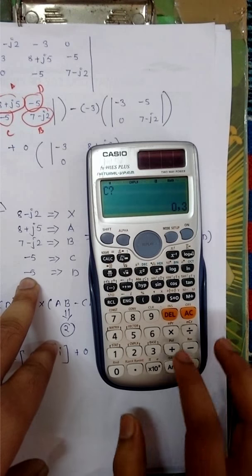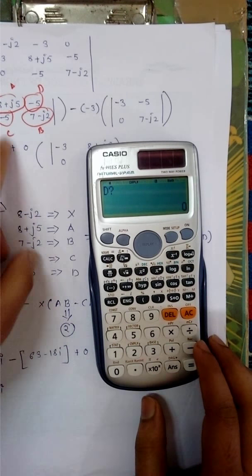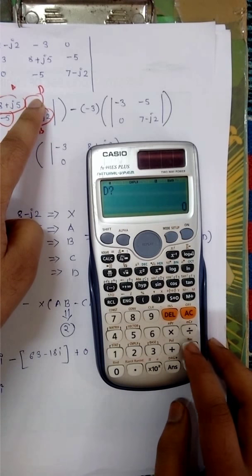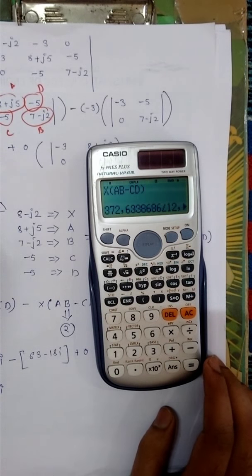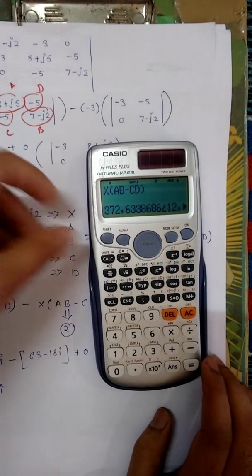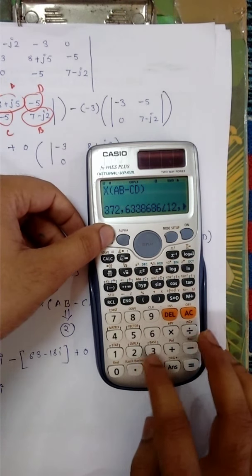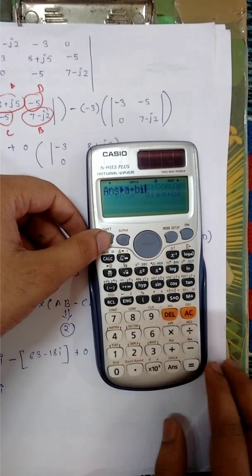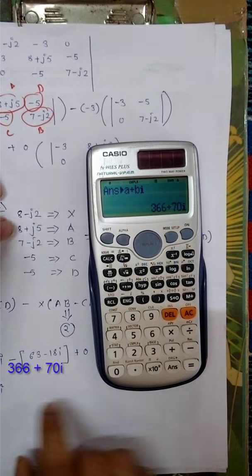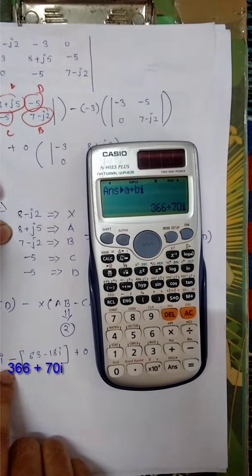C is minus 5. D is, you can see here, D is minus 5. Okay. Simple way. You can get this: 366 plus 7i.